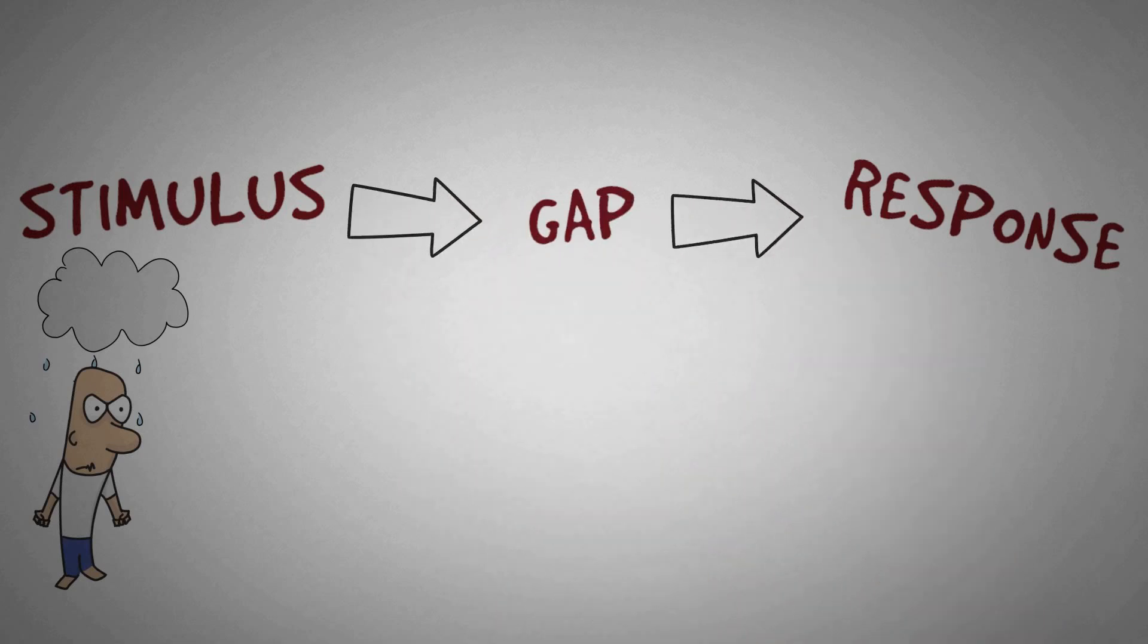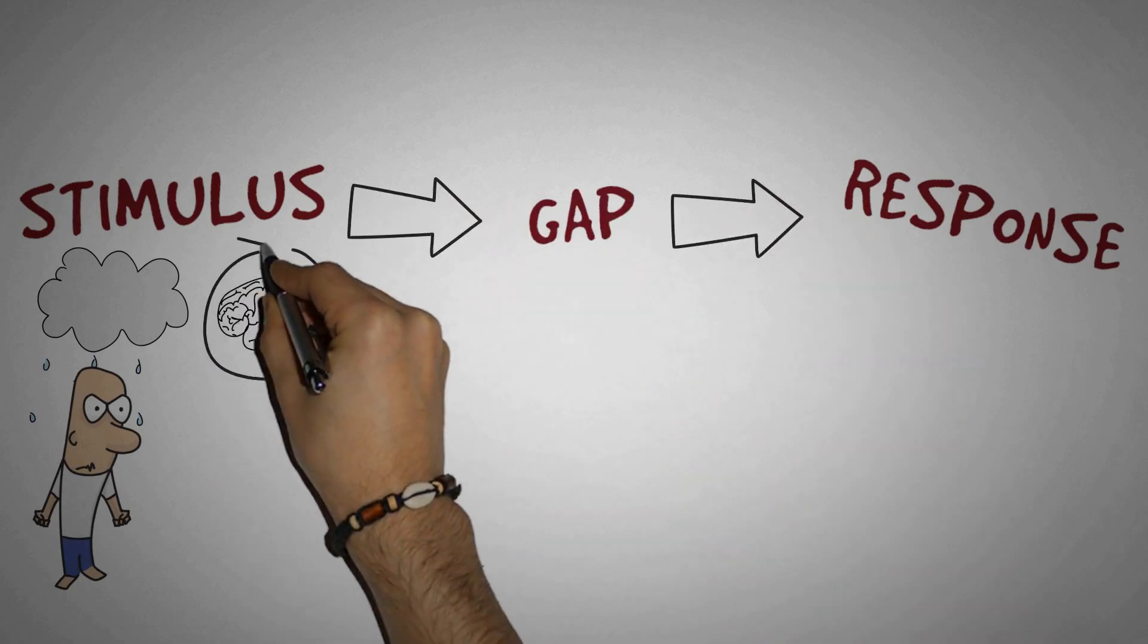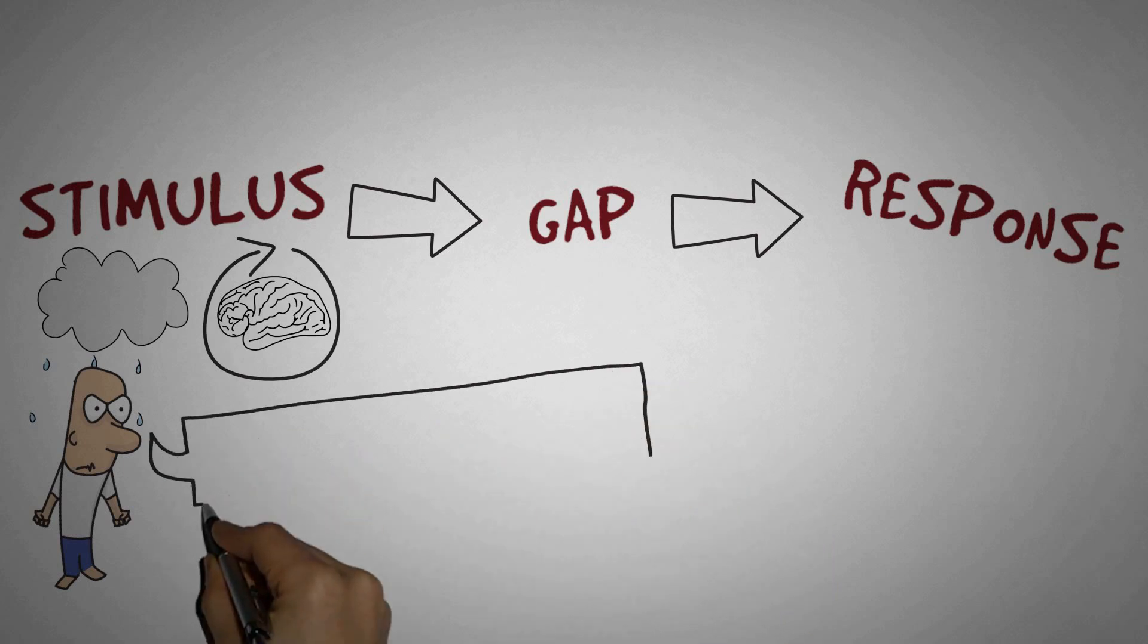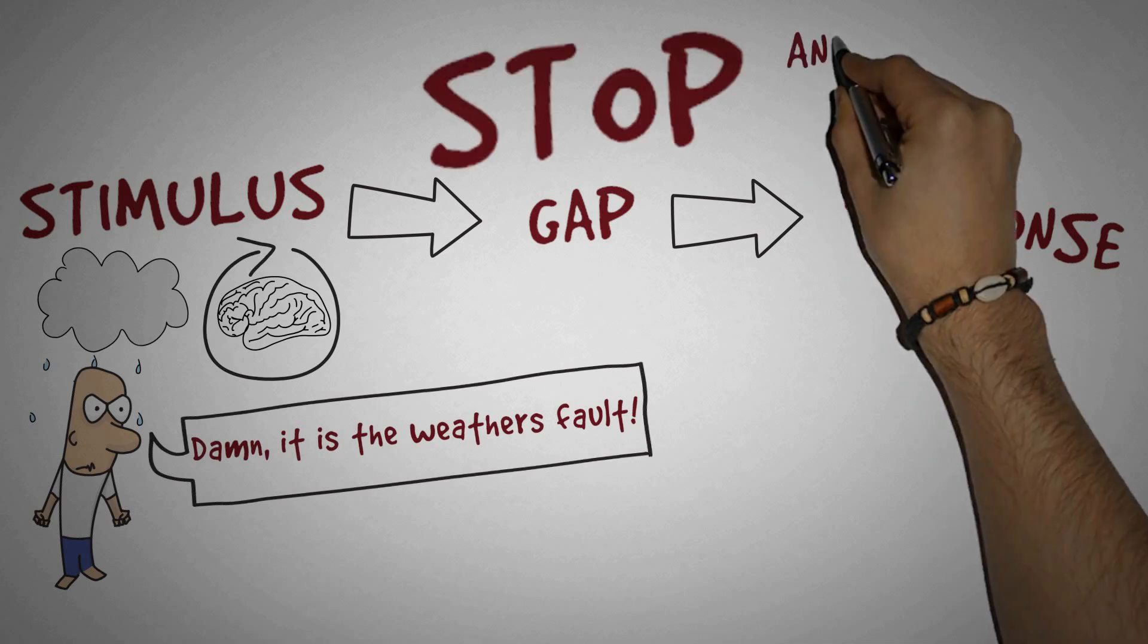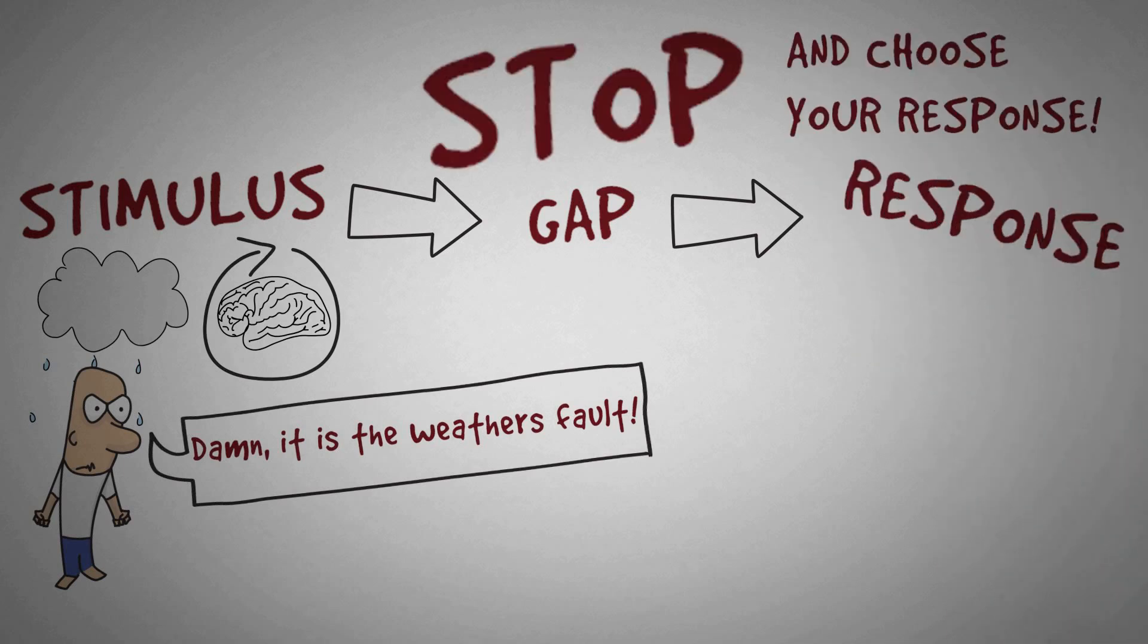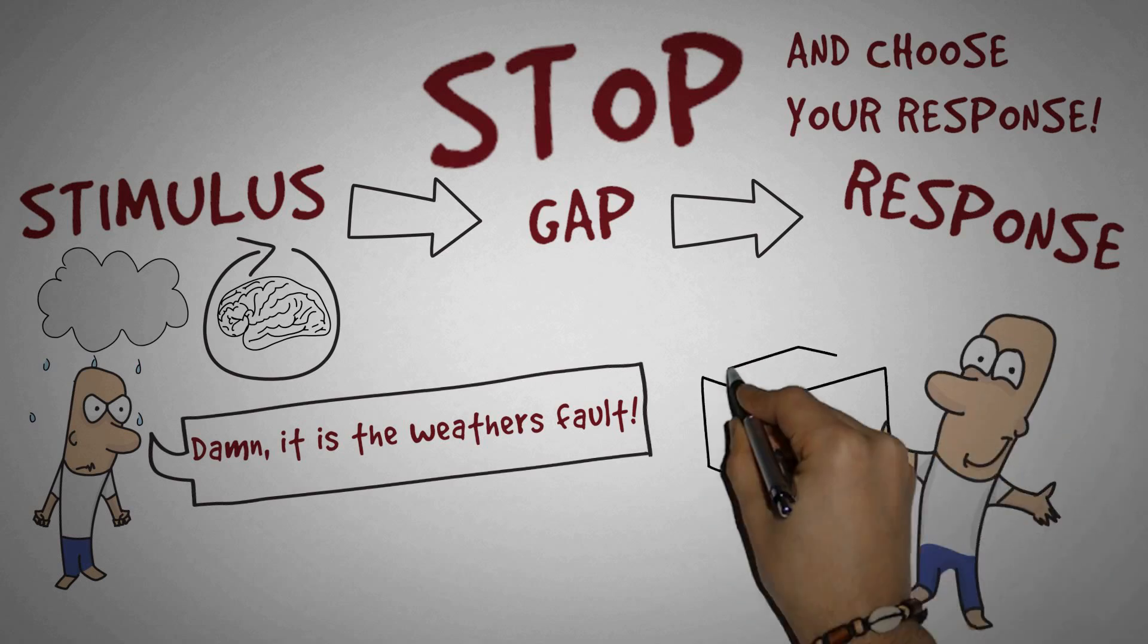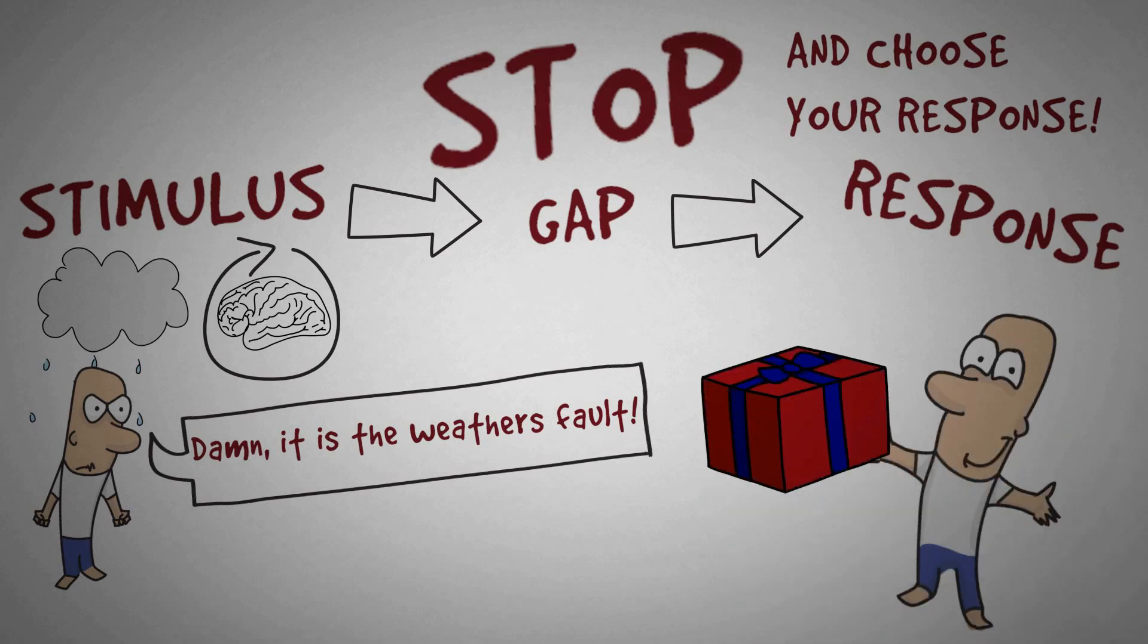If you are reactive, you let your mind run on autopilot and reinforce the bad habit. You say, 'Damn, it's the weather's fault,' and stand in the rain. But if this happens to you and you stop and choose your response, you can train yourself to become proactive. That is a gift only we humans have—to use the gap and decide our response. Most people don't know this.